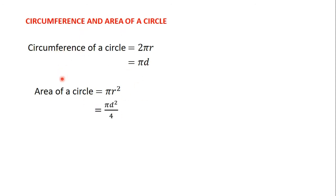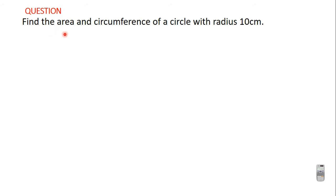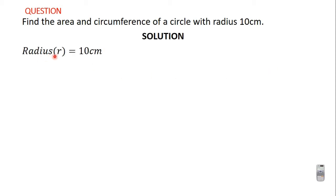Let's use these formulas to solve some questions. The question is: find the area and circumference of a circle whose radius r is equal to 10 centimeters. We are supposed to find both the area and circumference. The formula for finding the area of a circle when you have the radius is πr².